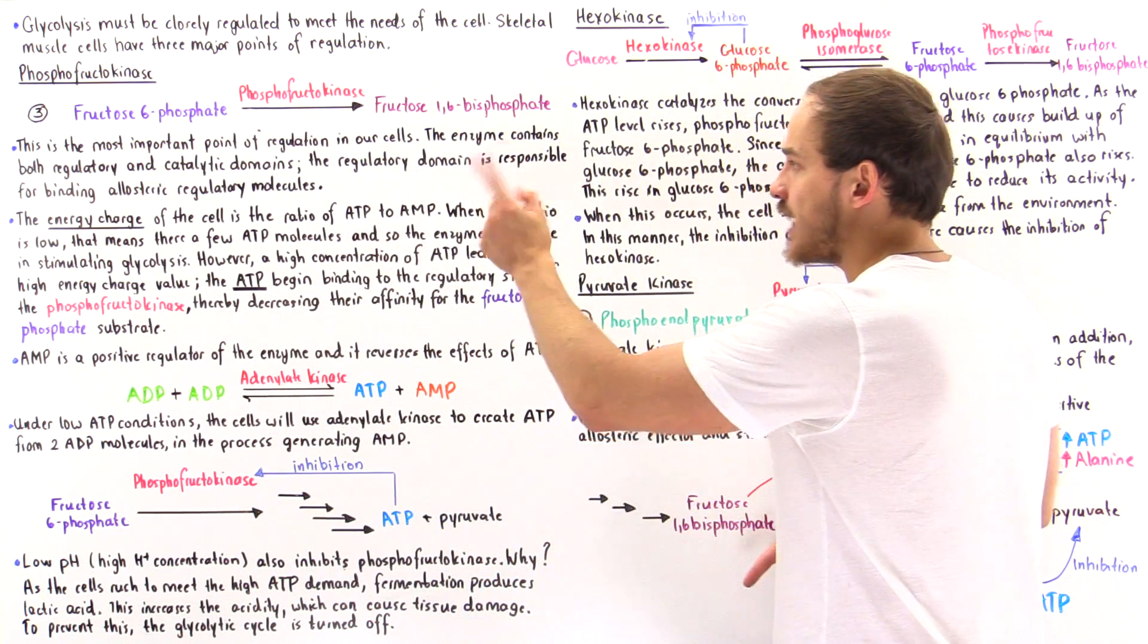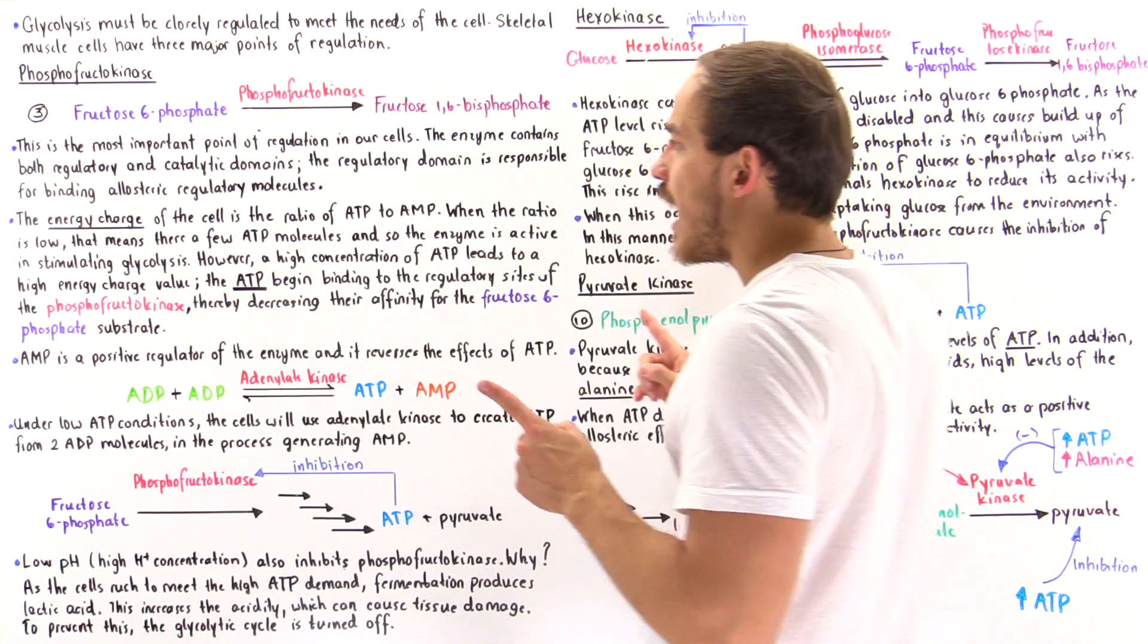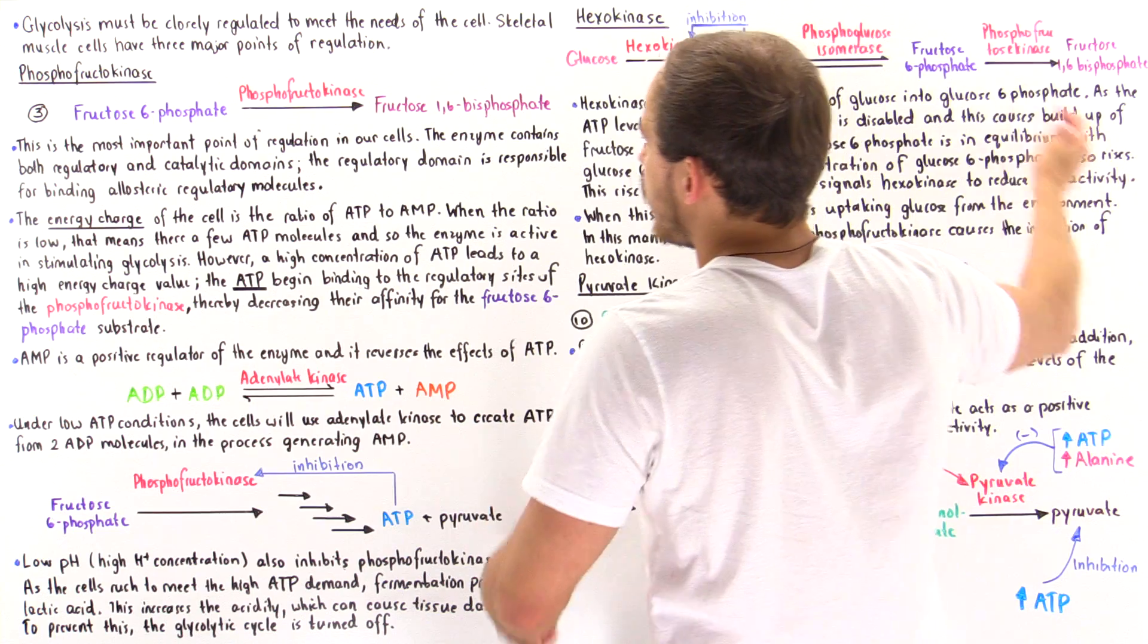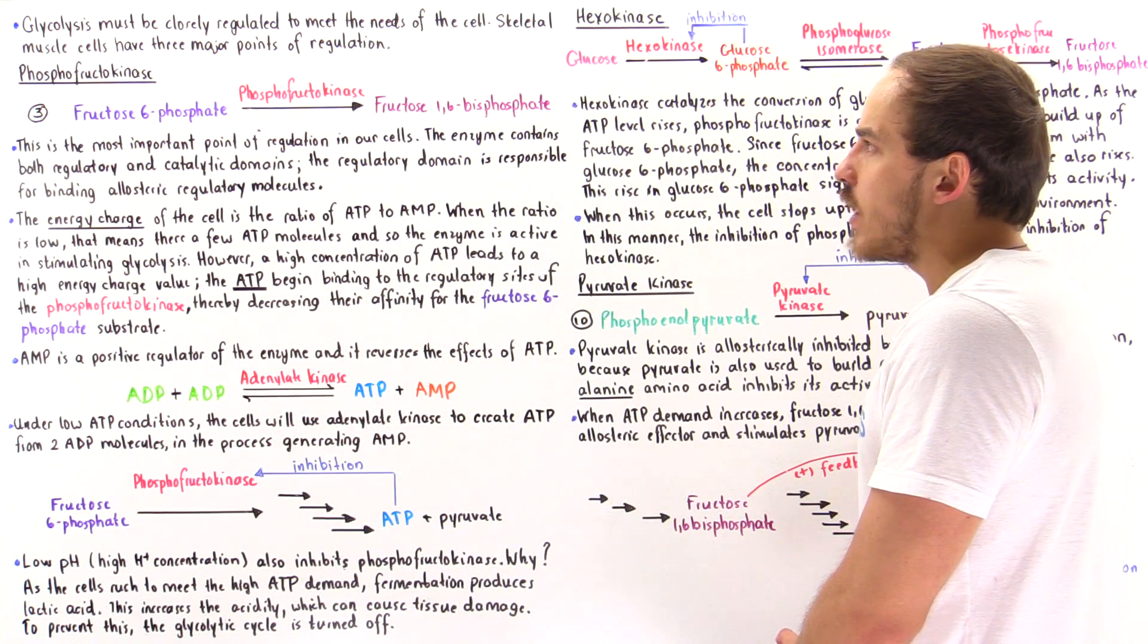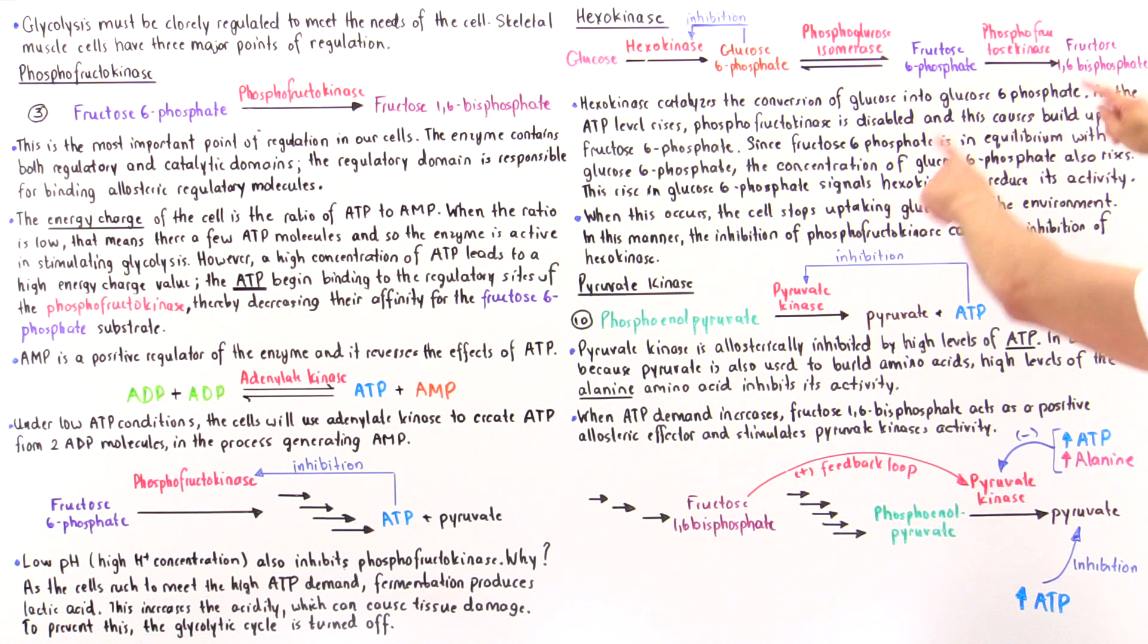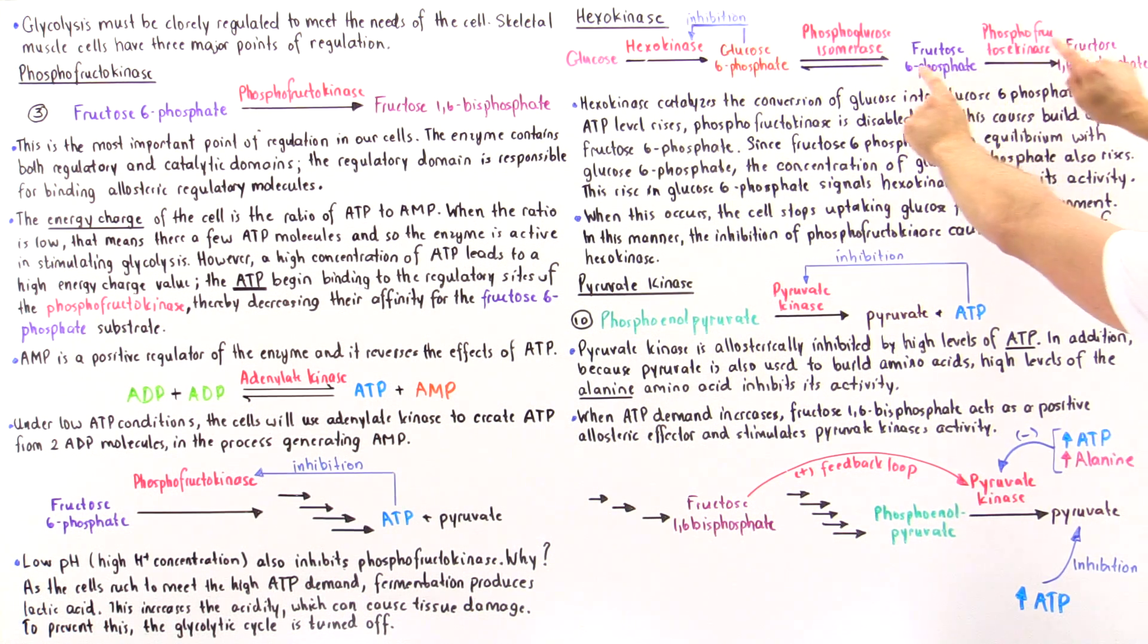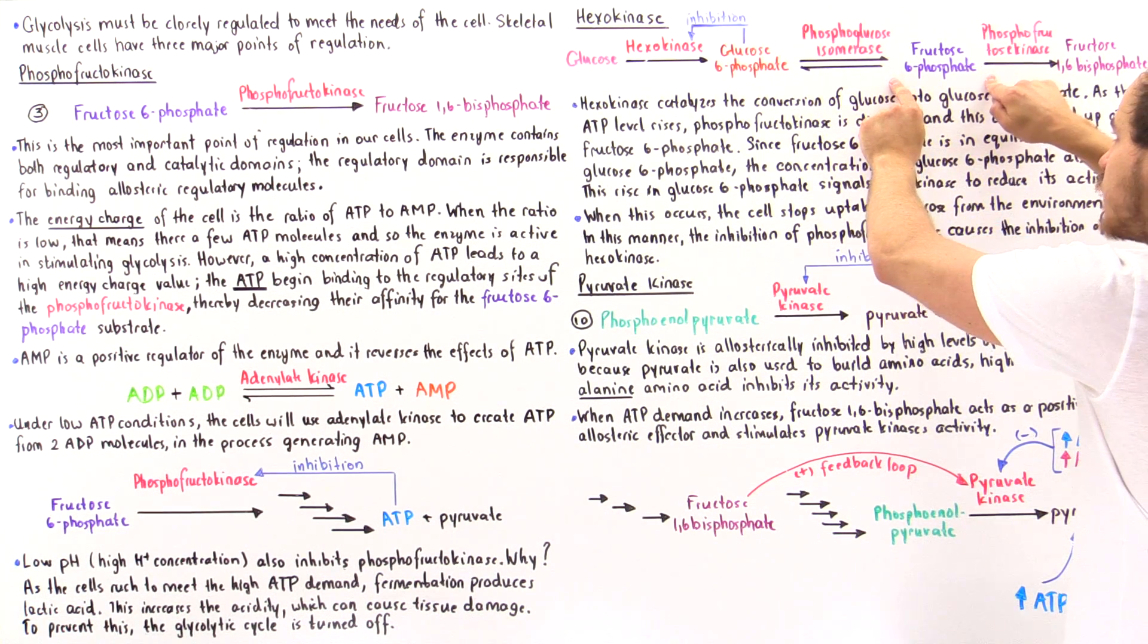The ratio of ATP to AMP will be high. So if that is high, then that means the excess ATP will go on and bind onto that phosphofructokinase. And what that will do is it will inhibit the activity of that enzyme. And if that enzyme's activity is inhibited, it will stop producing the fructose 1,6-bisphosphate, and that will increase the concentration of fructose 6-phosphate.